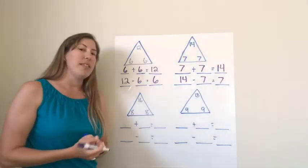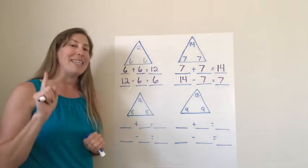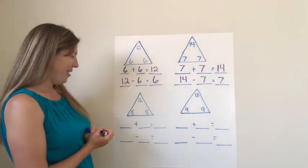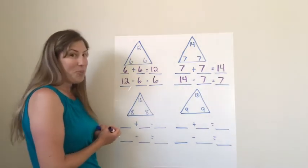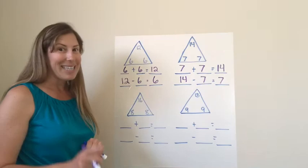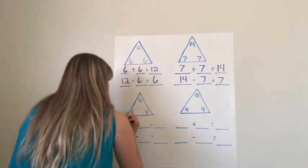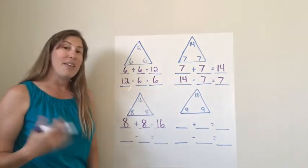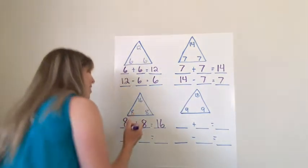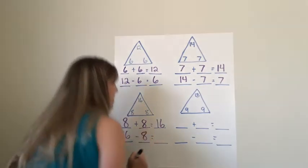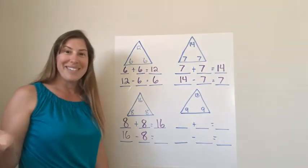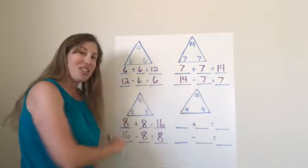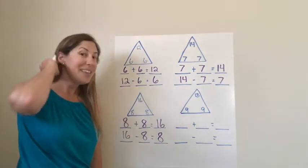All right, go ahead and do this one out loud. Let's say, what would the addition doubles sentence be? I hope you said eight plus eight equals sixteen, because that would be correct. Which means that if I saw a math problem that said sixteen take away eight, what would be the difference? Eight, that's right. Do you see the relationship between the numbers and the operation?